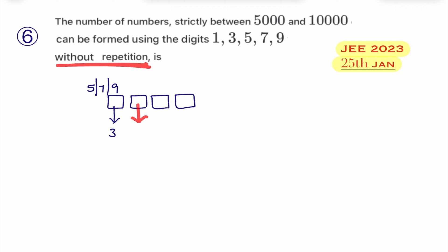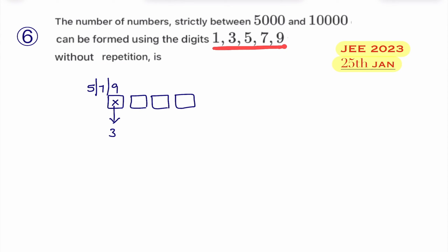Now, since repetition of digits is not allowed, the first box is already filled with one of the three numbers. Suppose 5 is there — we cannot write 5 again in the second box. We have five digits total, and one digit is already used, so the second box can be filled in four ways — any of the remaining four numbers.